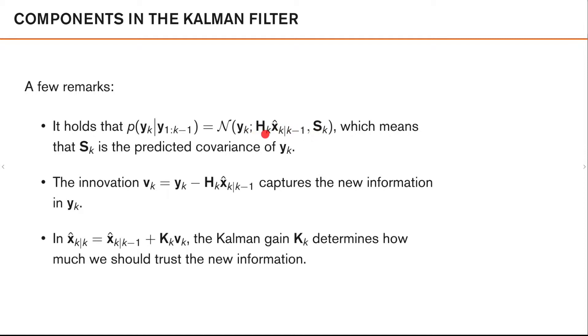It's easy to see that this product here is the mean using the observation model. So the observation model for our linear and Gaussian models is just yk equals hk times xk plus some measurement noise r.